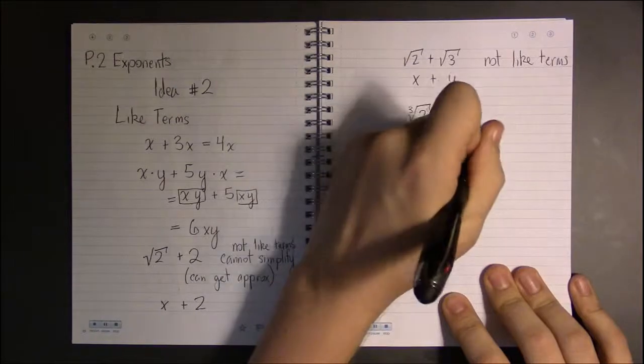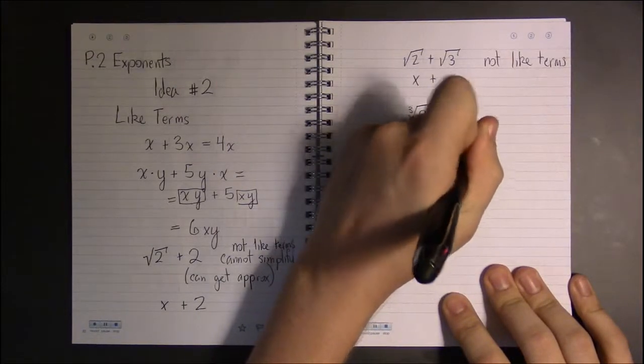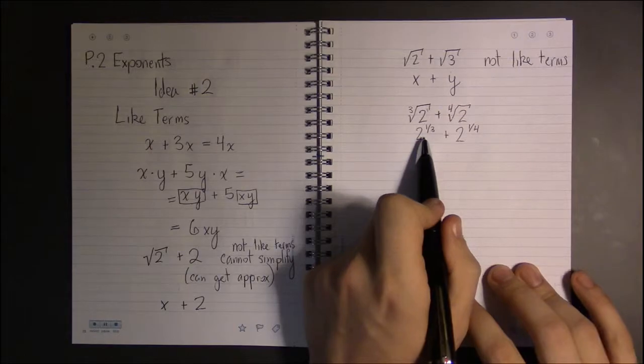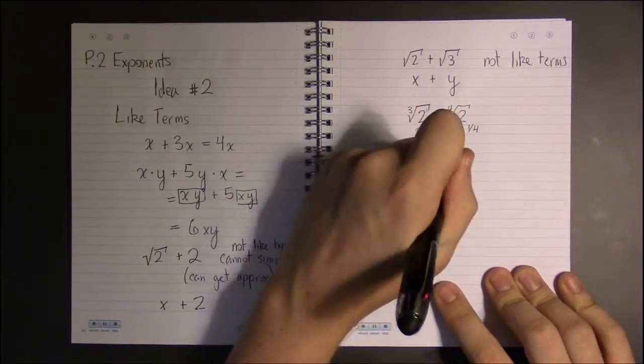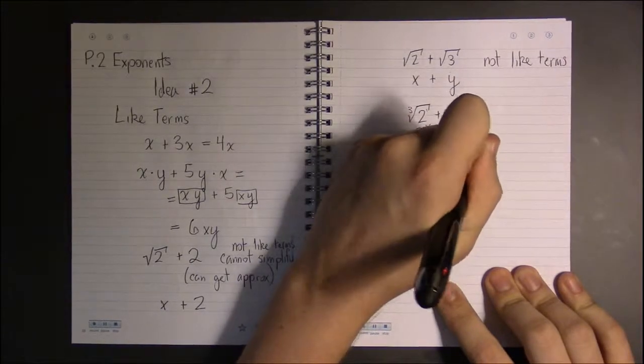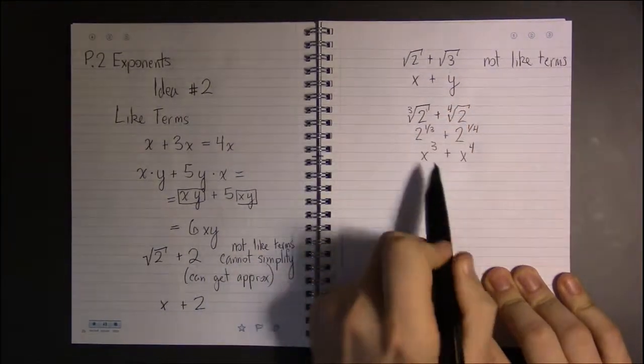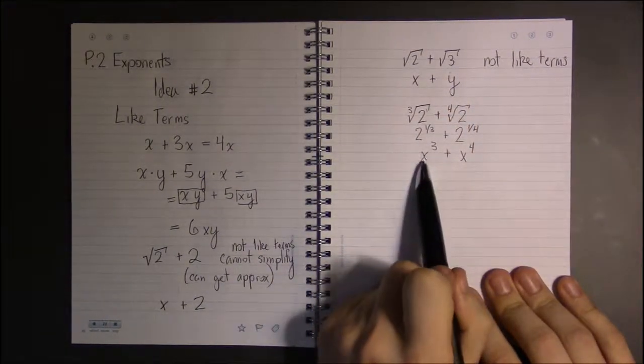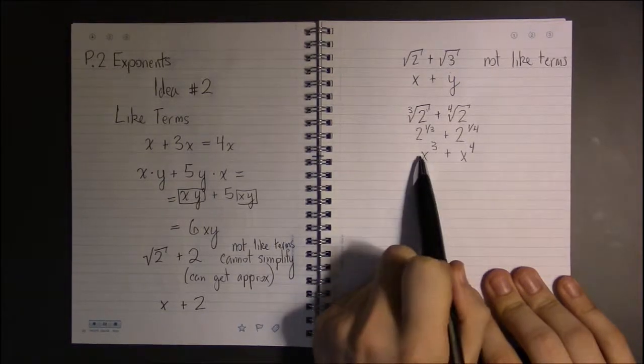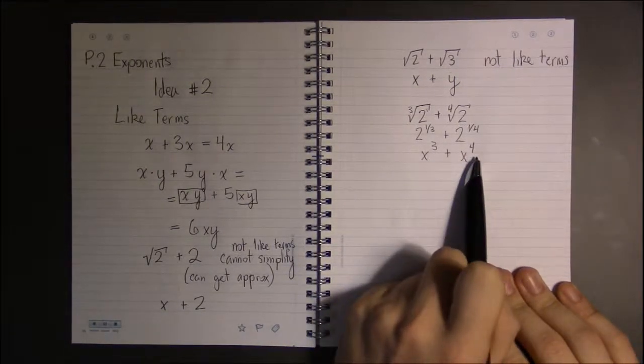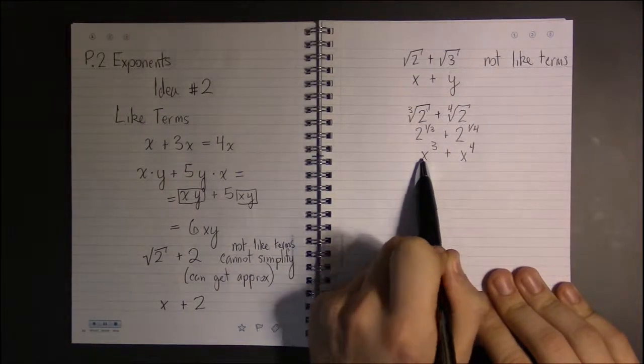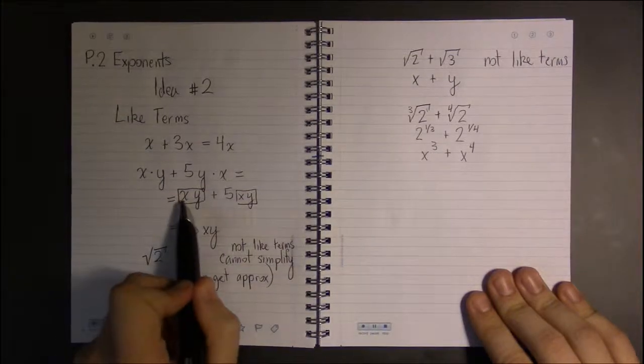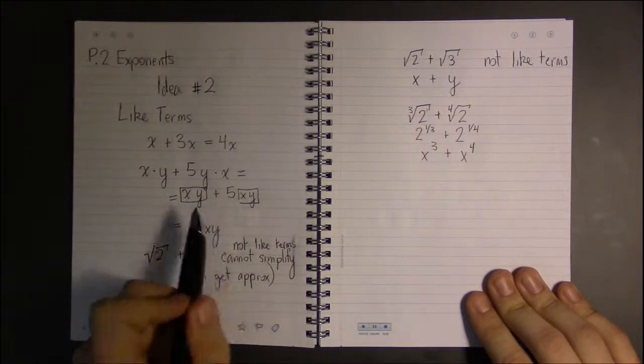So we have 2 to two different exponents here. That's kind of like saying x cubed plus x to the fourth. I can't really combine it here because while they both have three x's in them, this one has a fourth x that isn't matched by anything over here.